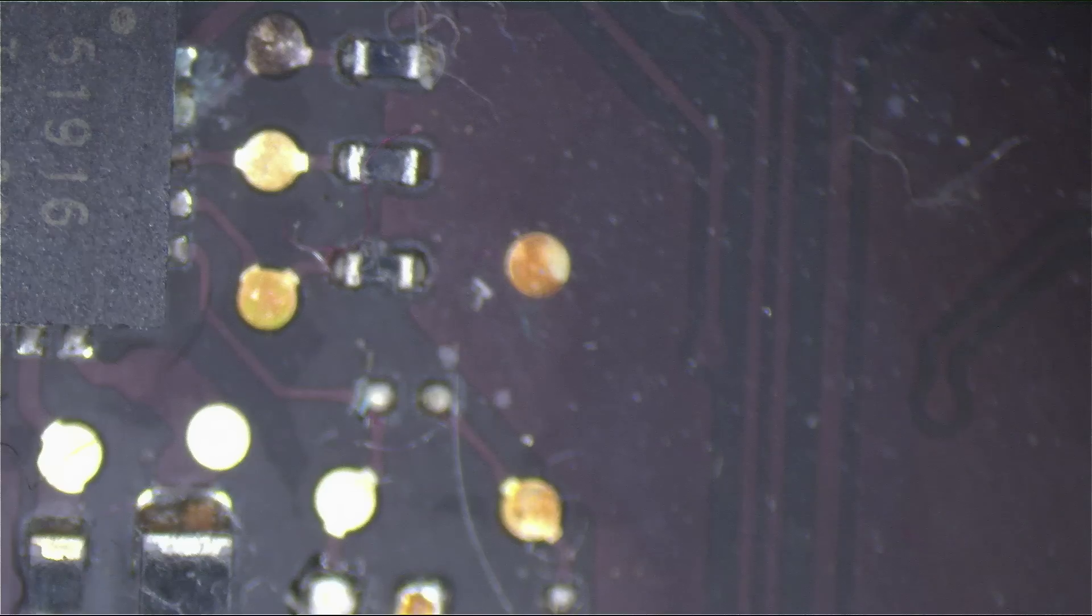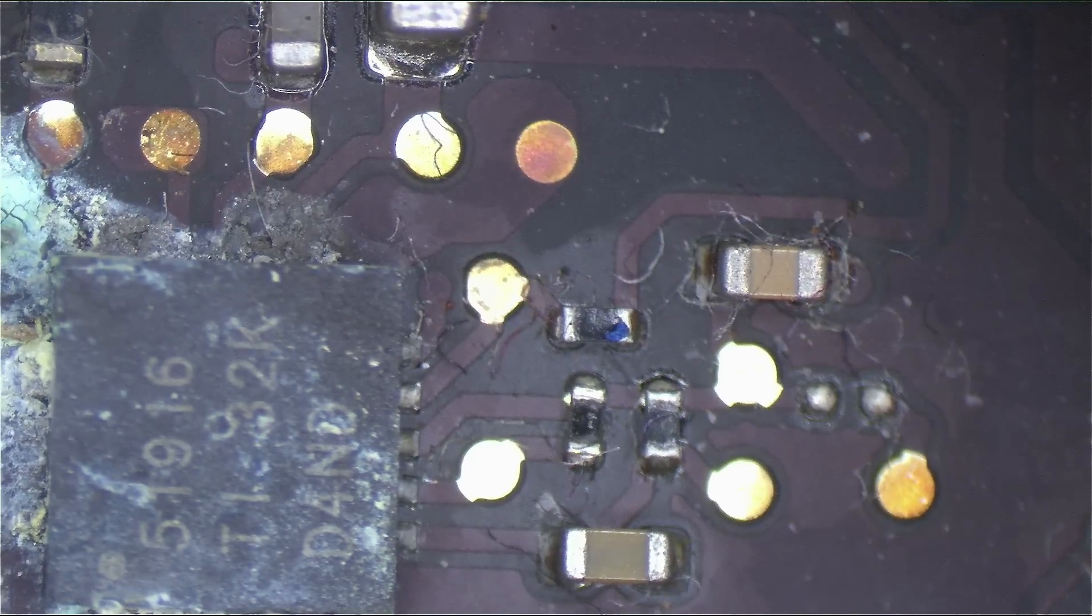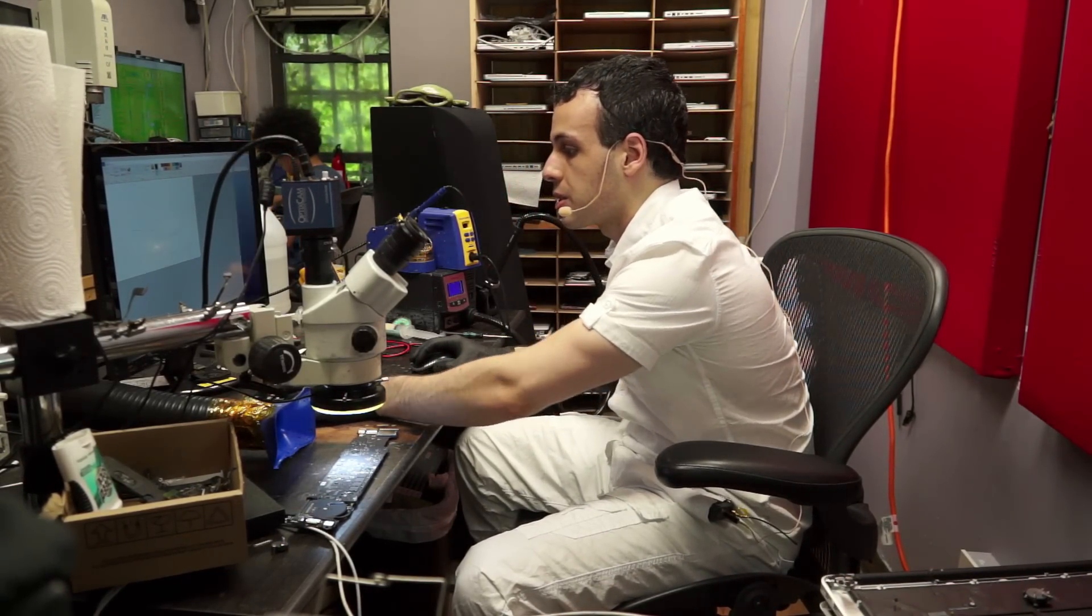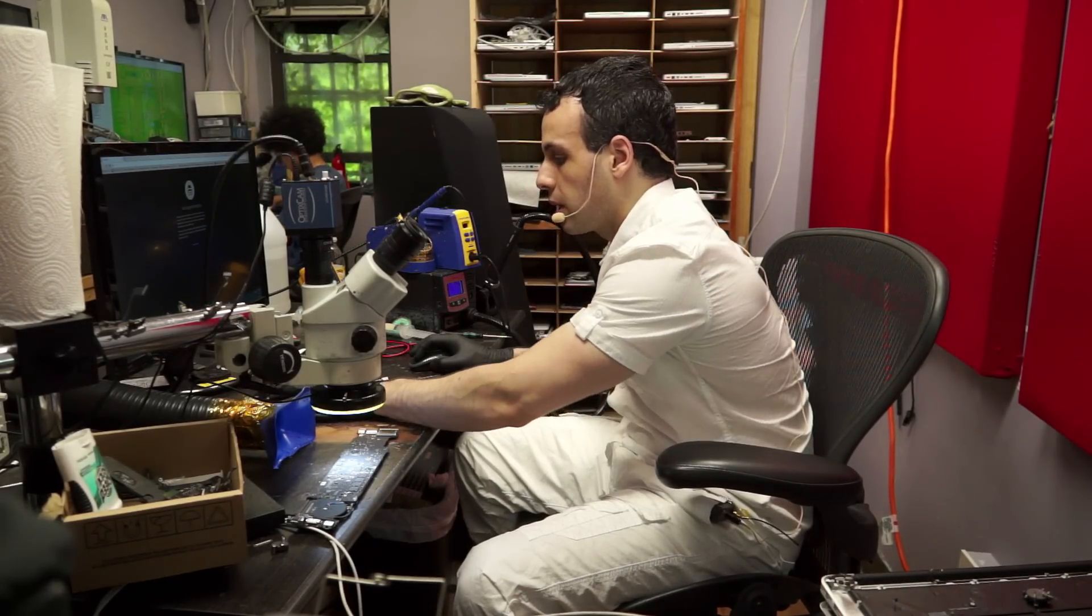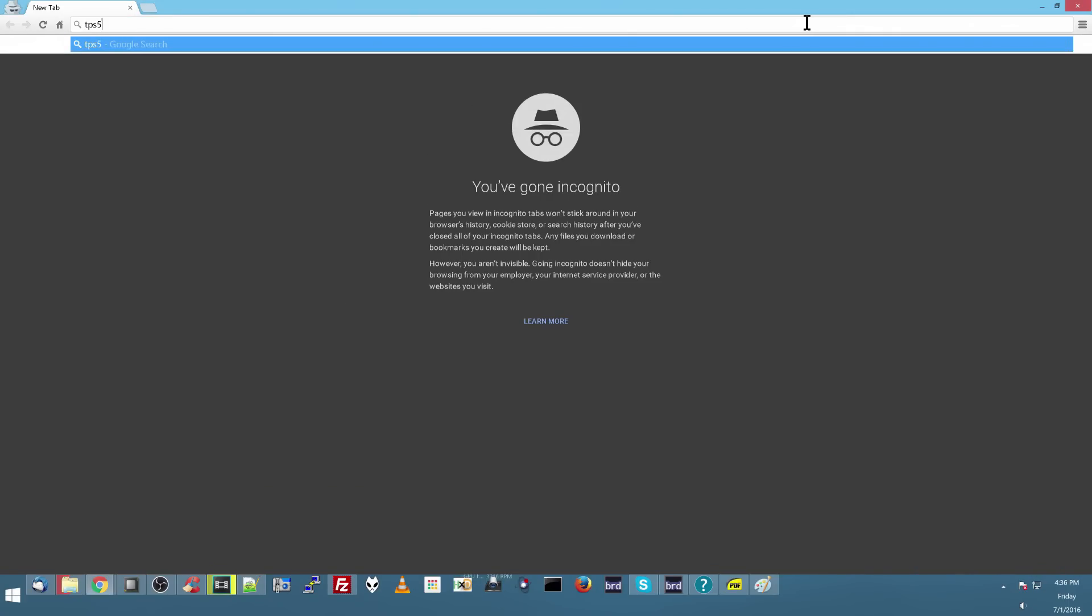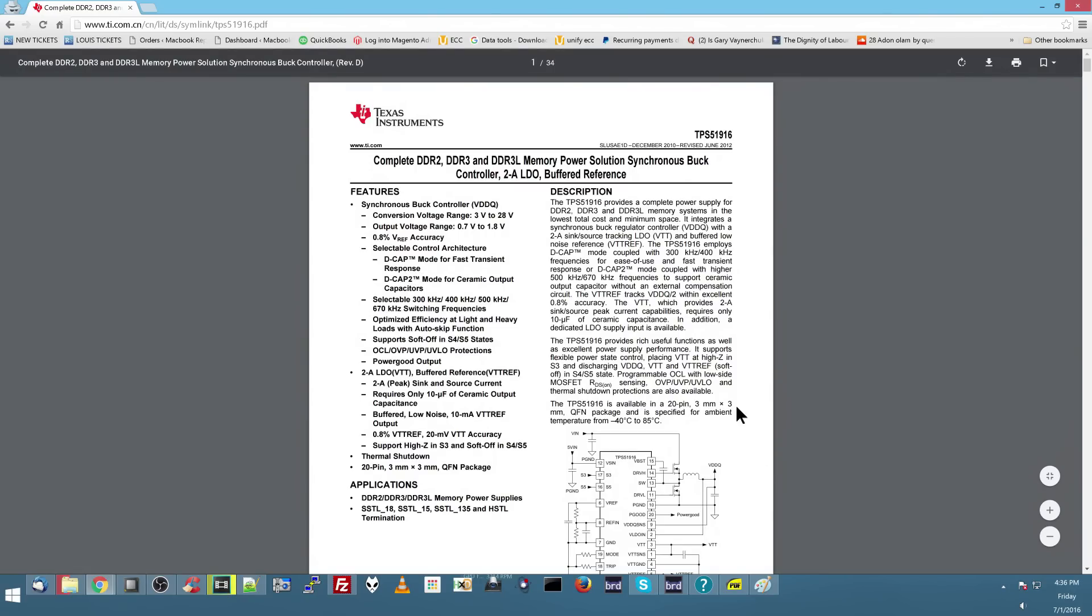So what I would do here, one thing you may notice is that the chip says TI on it, which indicates that it's probably made by Texas Instruments. And then it says 51916. Now, most of the Texas Instruments chip sets that you're going to find, they start with TPS. So what I would do here is I would Google TPS 51916 and see what I find. Here we go.